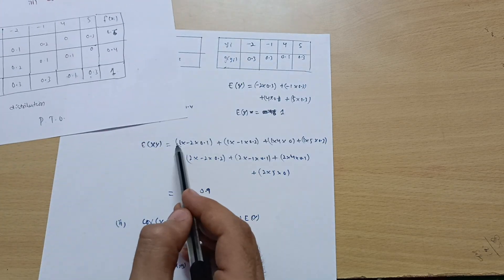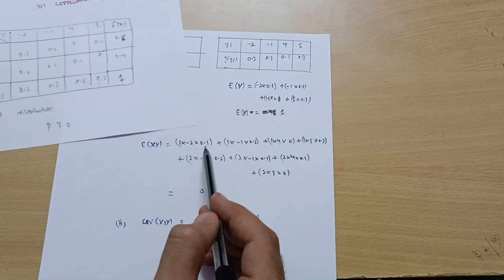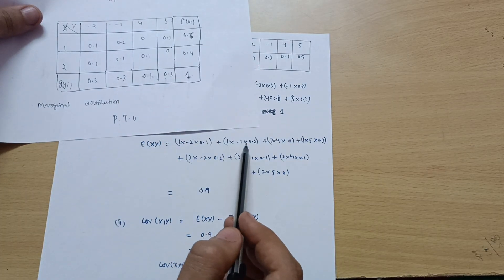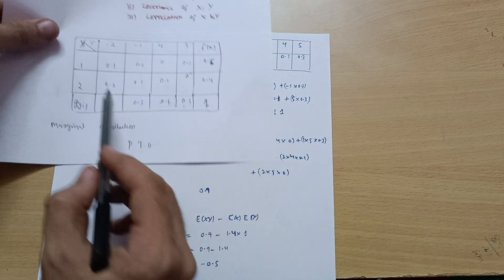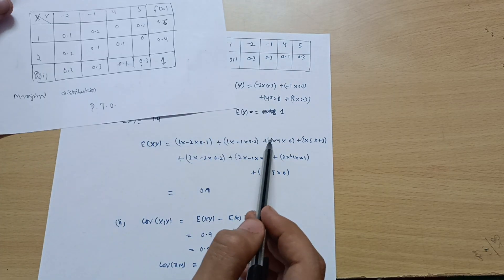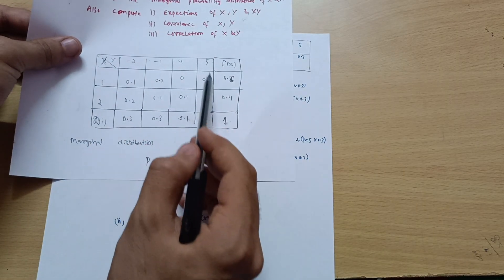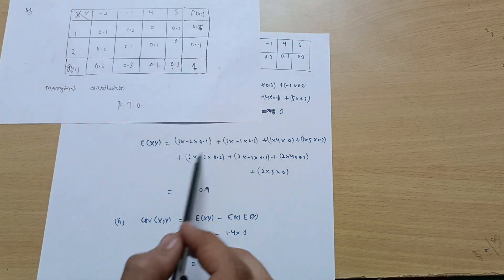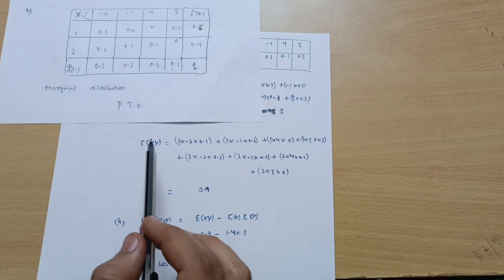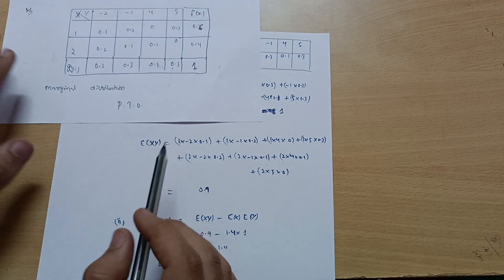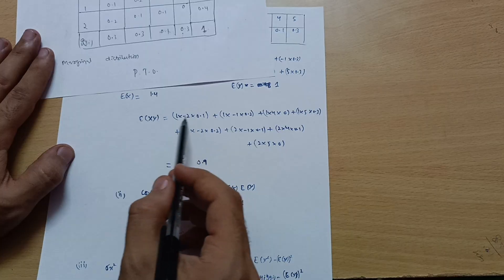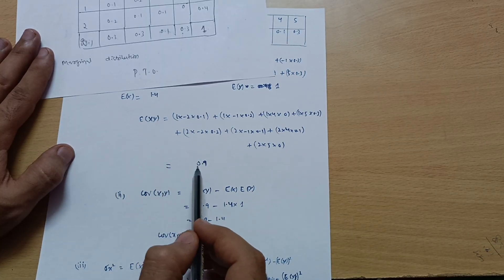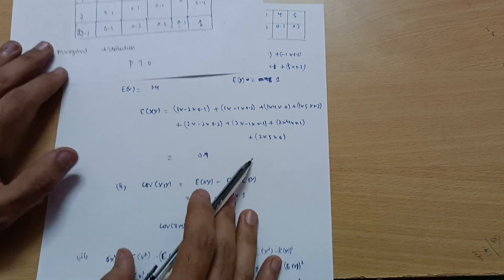Now for E[XY], we calculate: 1 times minus 2 times 0.1, plus 1 times minus 1 times 0.2, plus 1 times 4 times 0, plus 1 times 5 times 0.3, and likewise for x equal to 2. By this calculation, E[XY] equals 0.9.